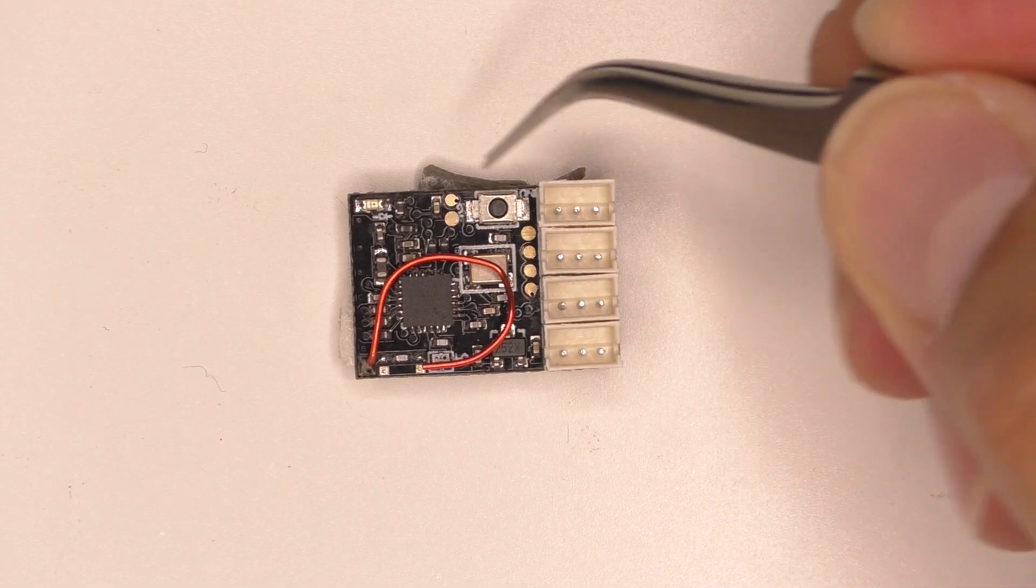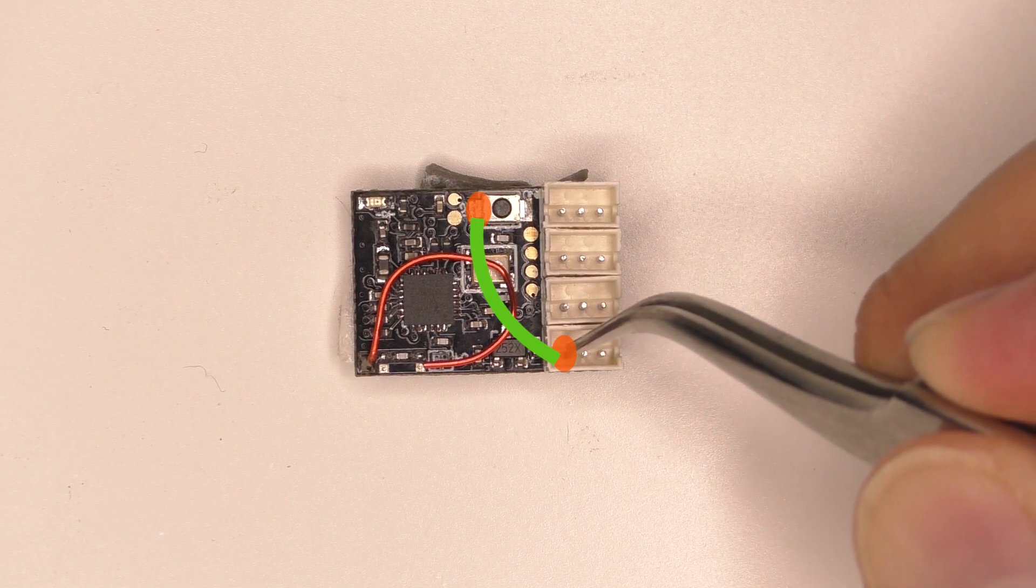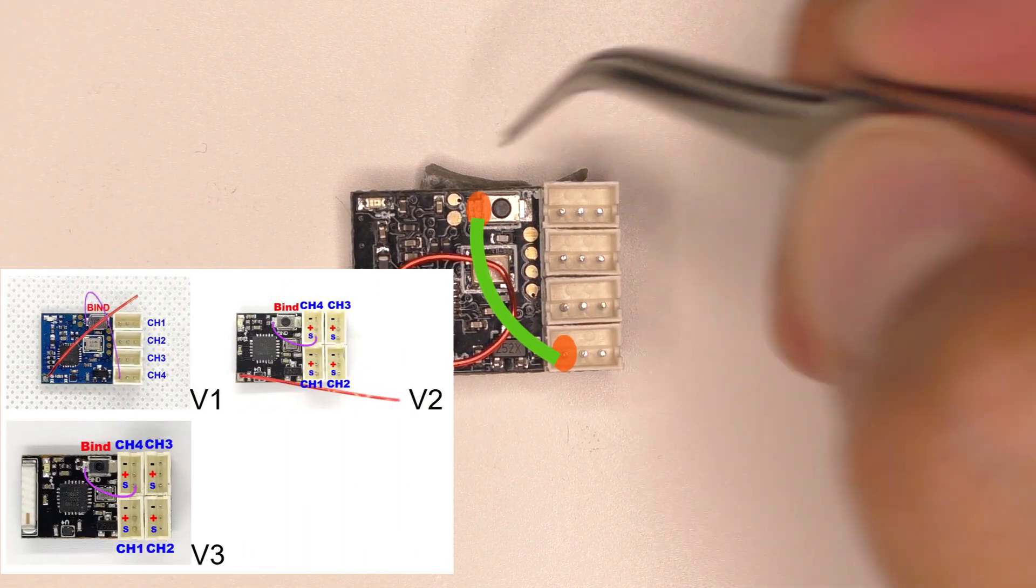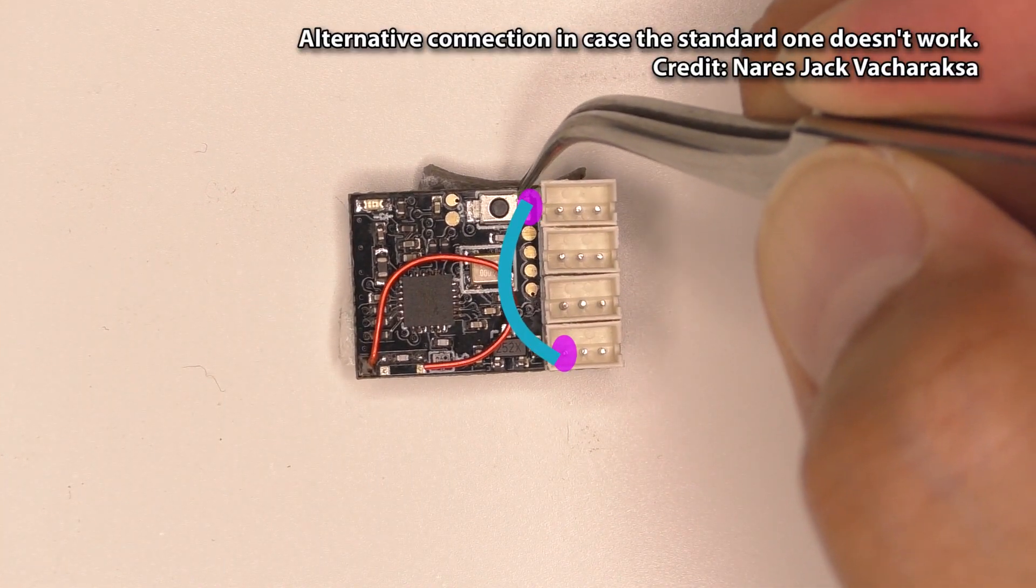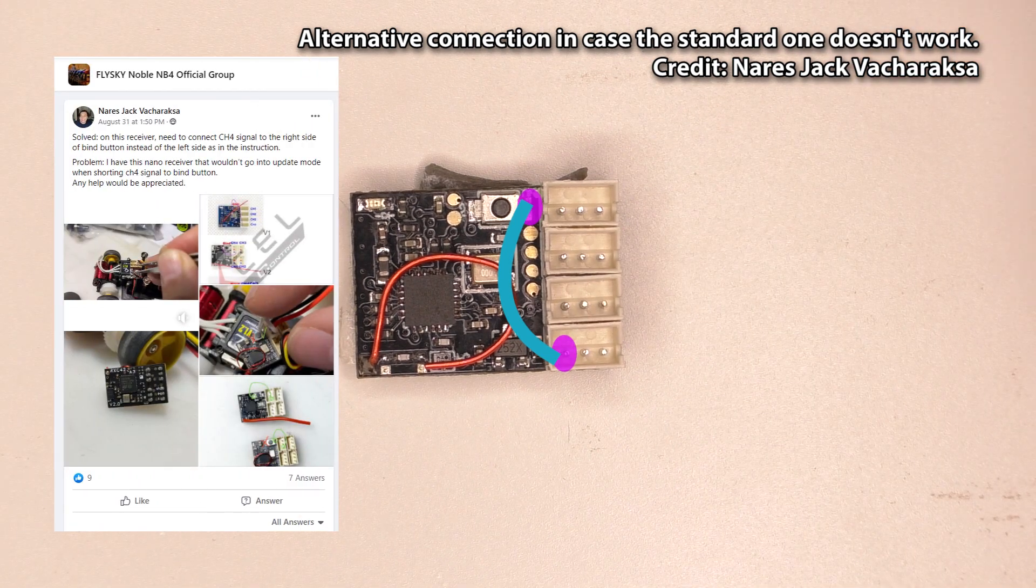To put it in forced update mode, you'll need to connect this side of the buy button to the signal pin of channel 4. If your receiver has a different layout than mine, you'll need to check where channel 4 is. If that doesn't work, you can try and connect it to the other side of the buy button. It was Mr. Narace Jack who found this out, so all credit is to him.